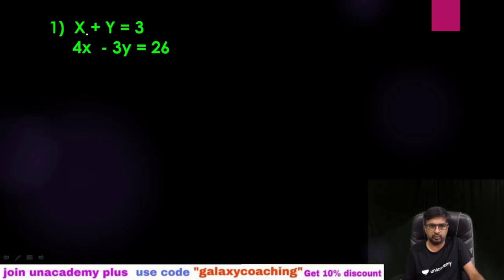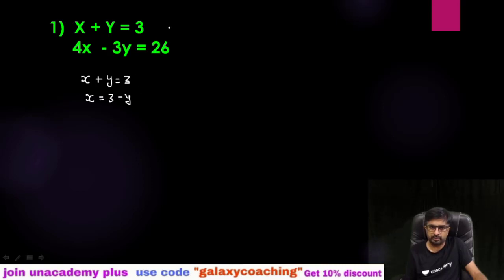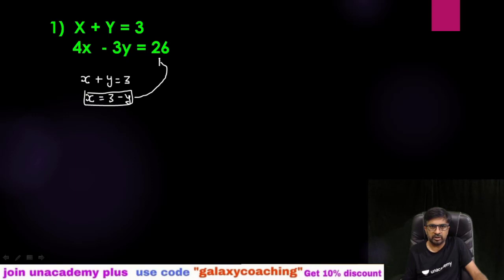First of all, we need to select one simple equation out of the two. I am going to select this one. I know that x plus y equals 3, so I am going to find out the value of either x or y from this. Let me take x equals 3 minus y. I have found out the value of x in terms of y — that is 3 minus y — from equation number one.